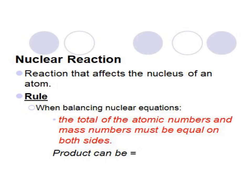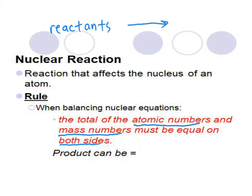We're going to focus on balancing nuclear equations. Nuclear equations involve reactions that affect the nucleus of an atom — it's the process of decay. The rule for balancing nuclear equations is that the atomic numbers and the mass numbers must be equal on both sides. We have the reactants, then the arrow, then the products, and the numbers on the top and bottom have to stay the same on both sides.